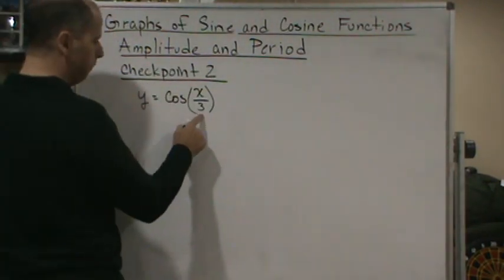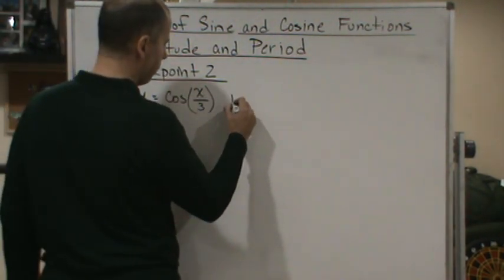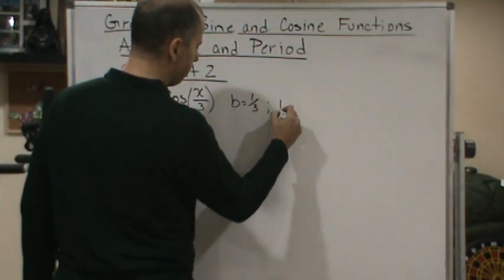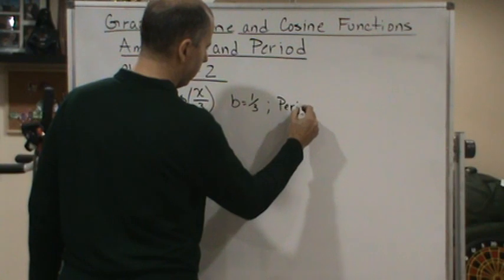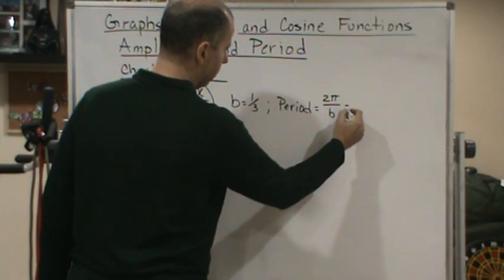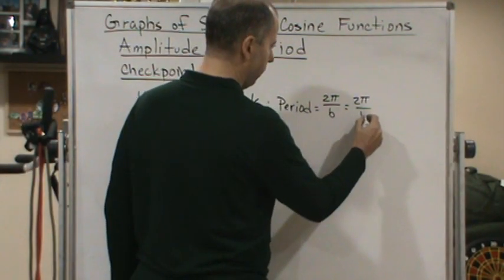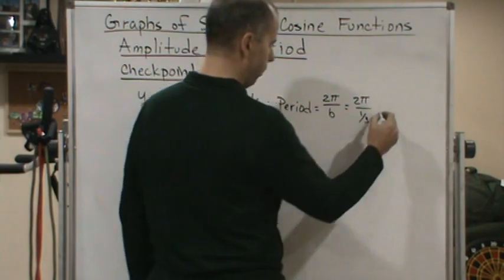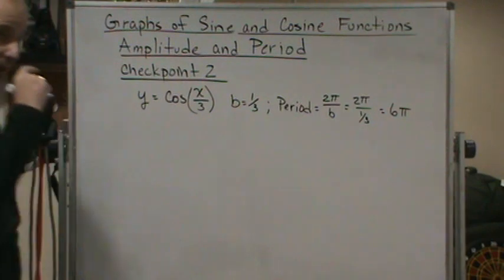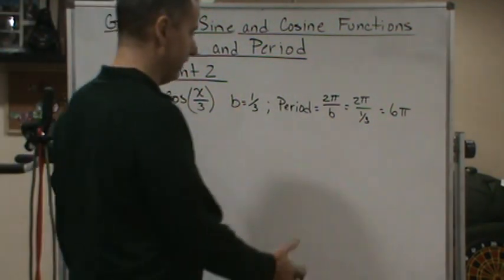Now let's start by figuring out the period. b as we can see here is one-third, right? So b is equal to one-third, which means that the period is going to equal what? It's 2π over b, which is 2π divided by one-third, which is going to equal 6π.